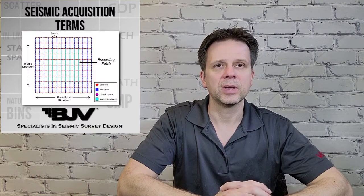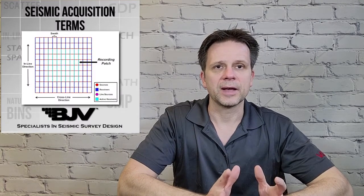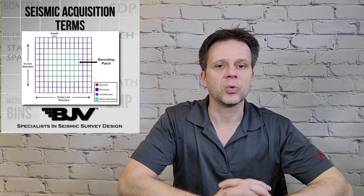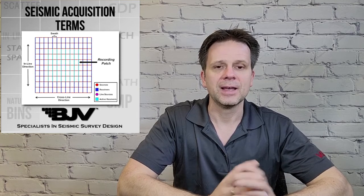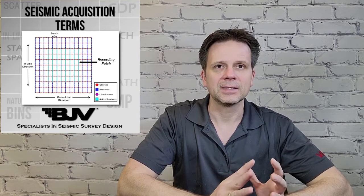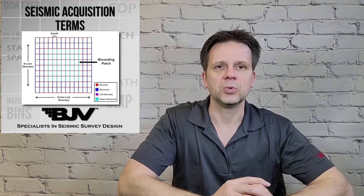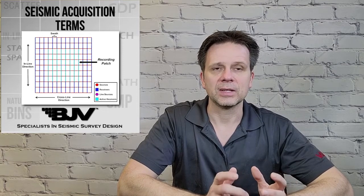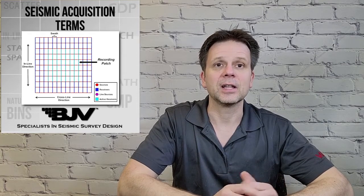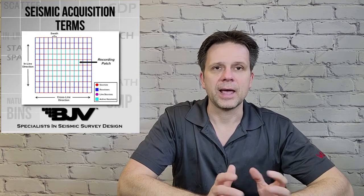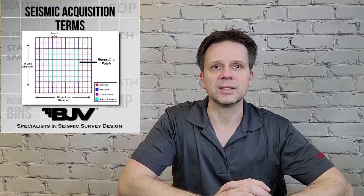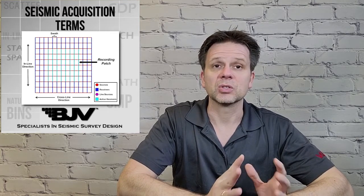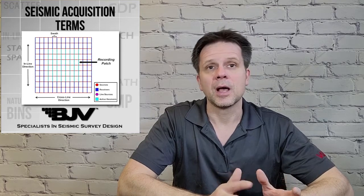The next thing I'd like to talk about is a recording patch. In the diagram here, it's showing light blue receiver squares in the middle of the 3D geometry — that is your recording patch. What that is, is the channels or receivers that are turned on and listening when the sources are taken. The source being taken is the yellow point right in the center of that grid. It's the minimum channels required to be recorded by the acquisition crew.